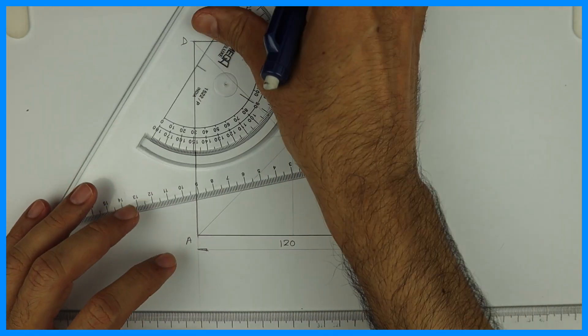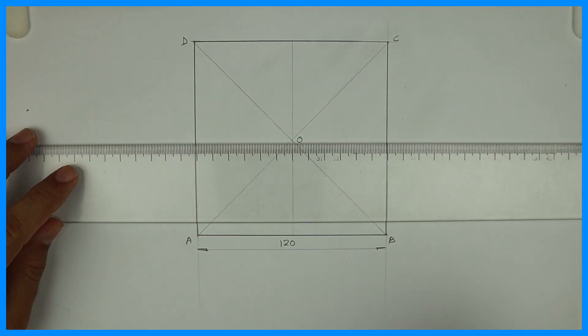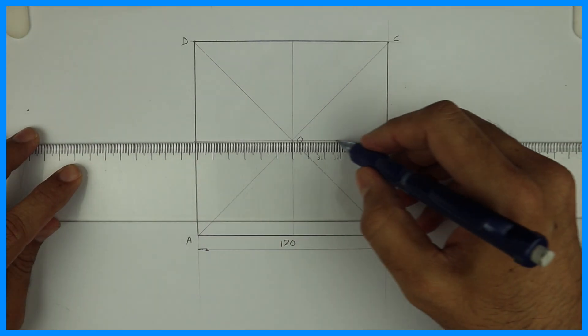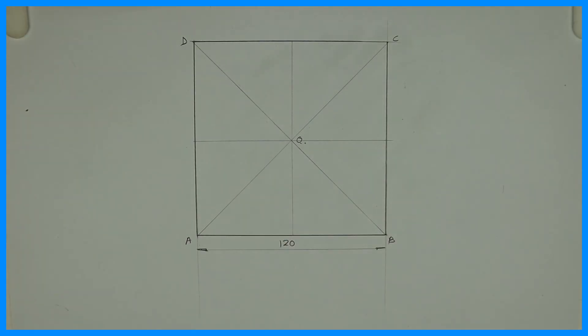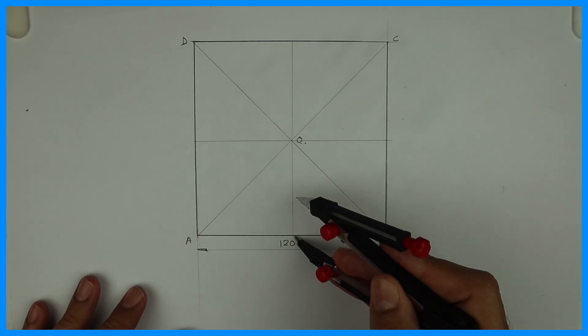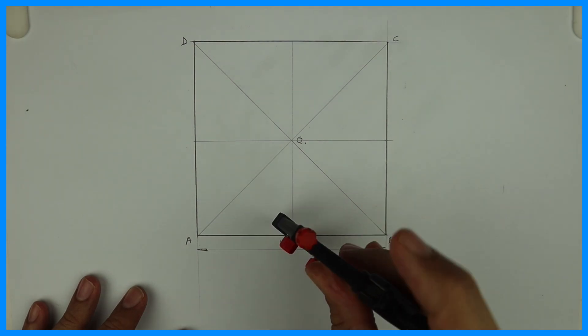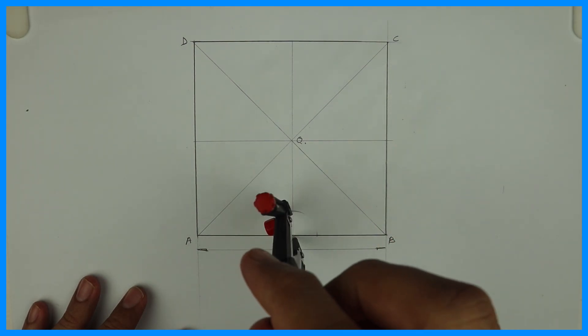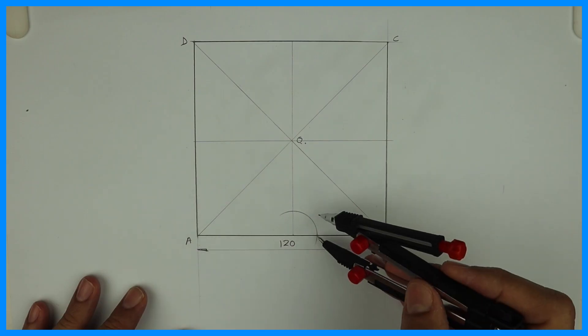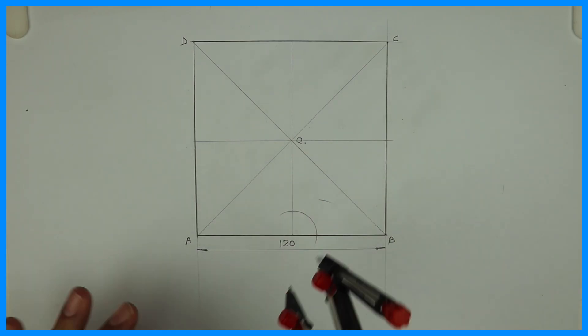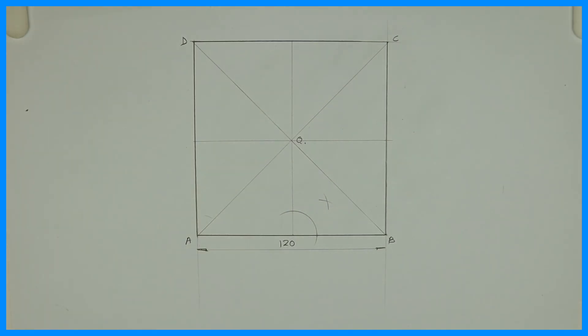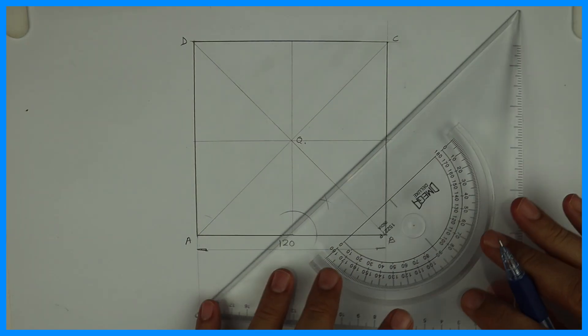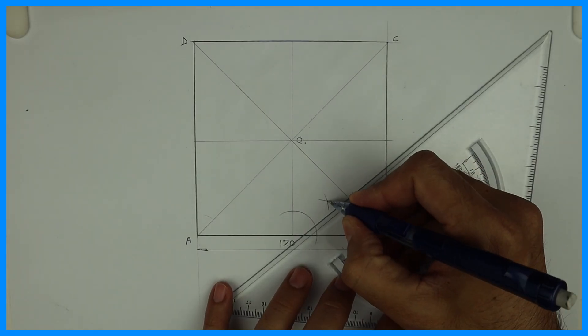From there you draw vertical line and from here you draw horizontal line. Now we bisect this angle. See this. This is 90 degrees and we are going to bisect this. We can take 45 degrees directly also. It will be one and same.